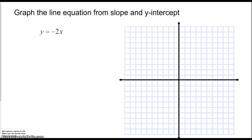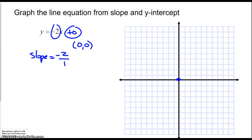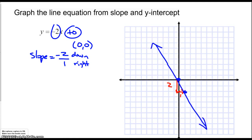Here's another example: y equals negative 2x, with no number on the end. If you think of it as plus nothing, the y-intercept is 0 — meaning this line crosses right at the origin, 0, 0. The slope is negative 2, or negative 2 over 1, so I go down 2 for every 1 to the right. That's a negative slope. I find the second point and draw my line through those two points.